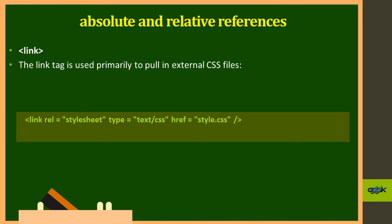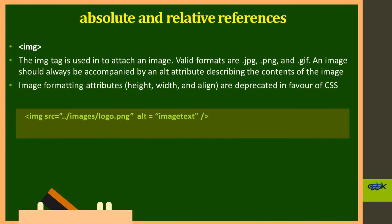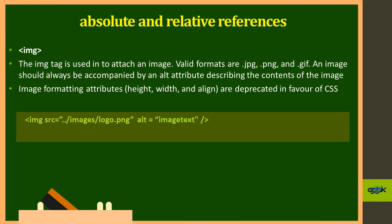For the image tag, img, the src and alt attributes are used. If the image is inside a subfolder called 'images', the folder name must be mentioned before the filename. In the previous video we used just the filename since the image was in the same folder, but here the full relative path including the folder is specified.